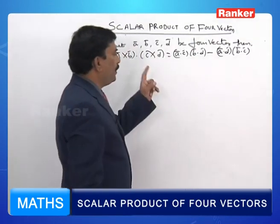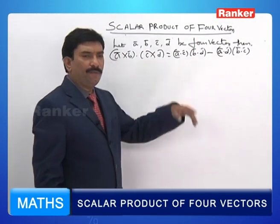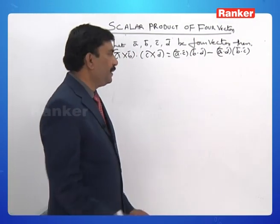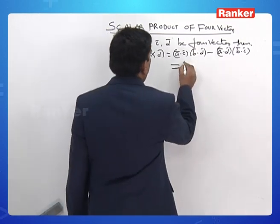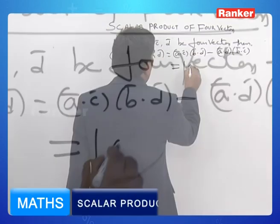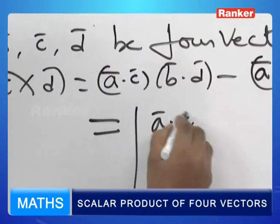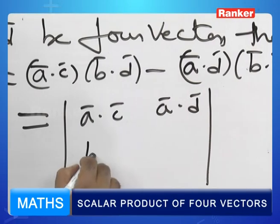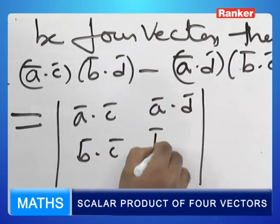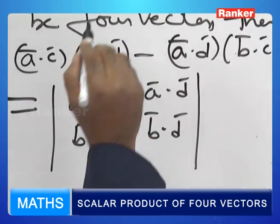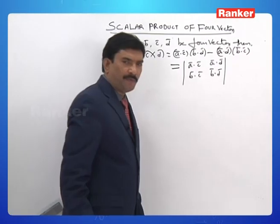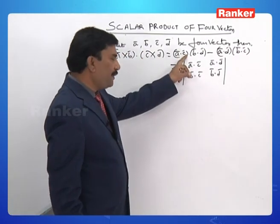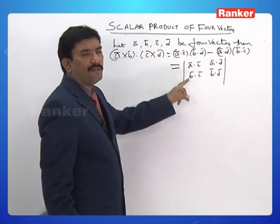Yes, so 1·3, 2·4 minus 1·4, 2·3 — easy to understand — is the same as A dot C, A dot D, B dot C, B dot D. This can be expressed either way.